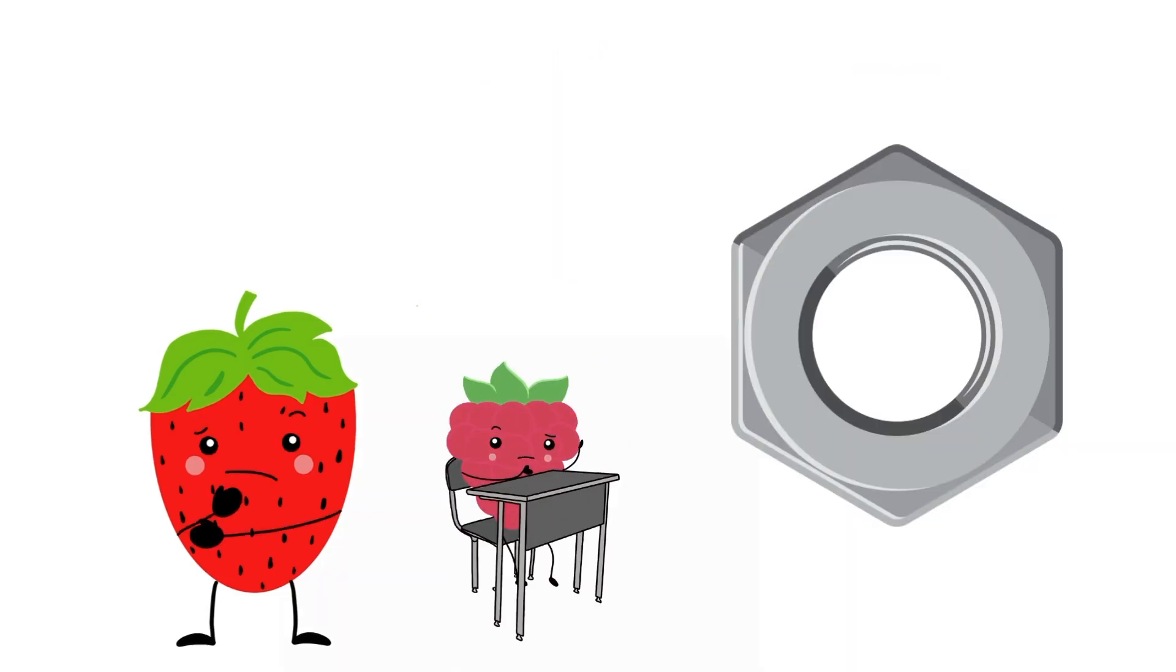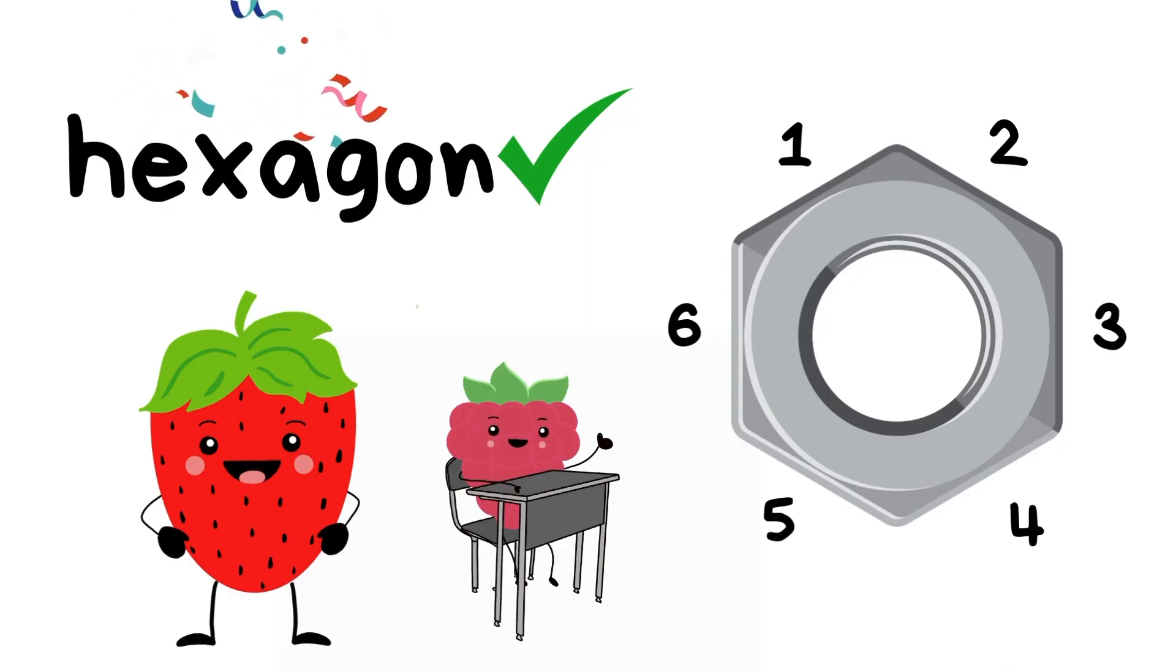What about this shape? Is this a hexagon? Does it have six sides like a hexagon? This object has six sides. That means it's a hexagon.